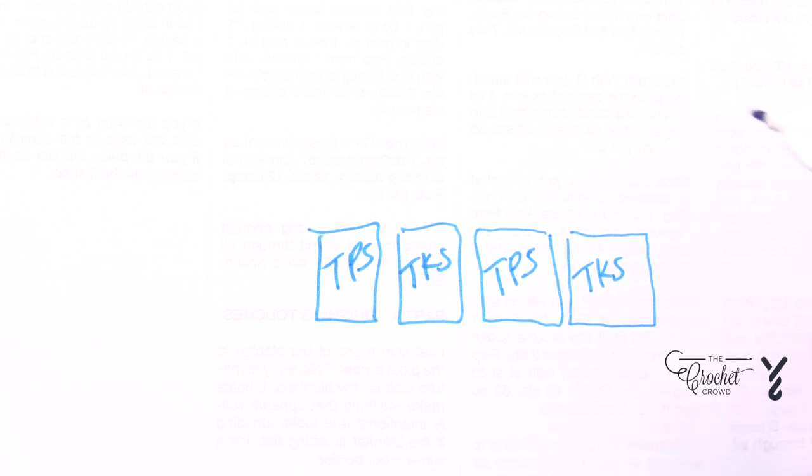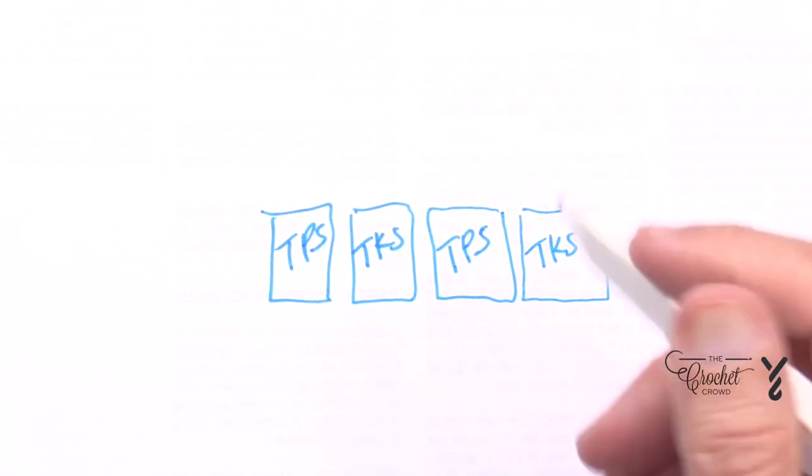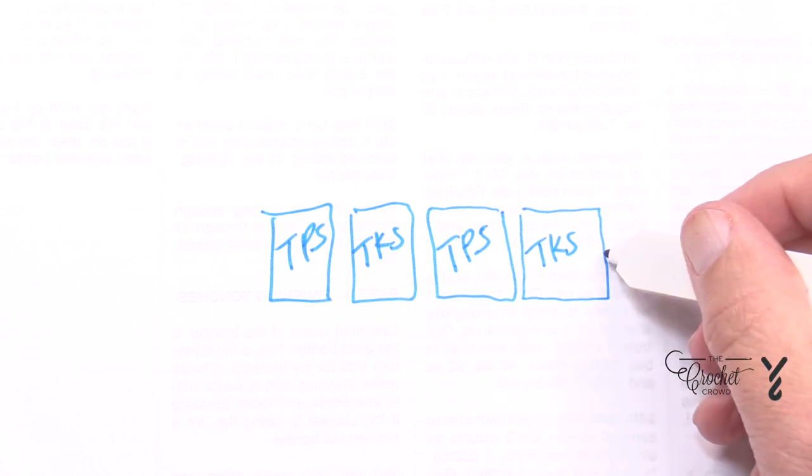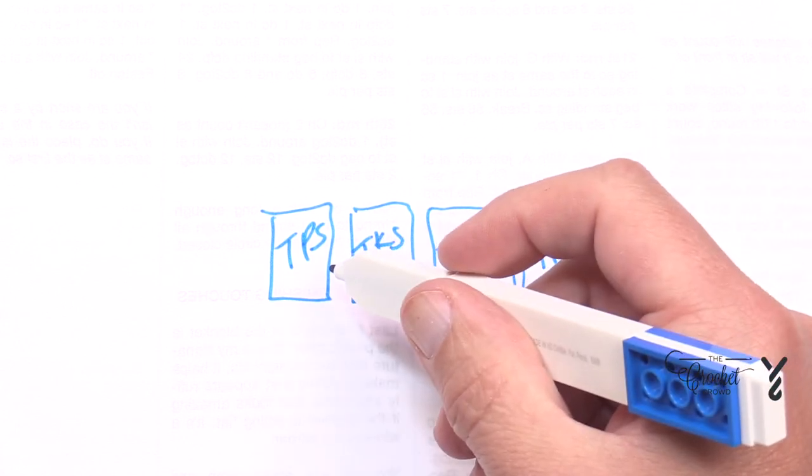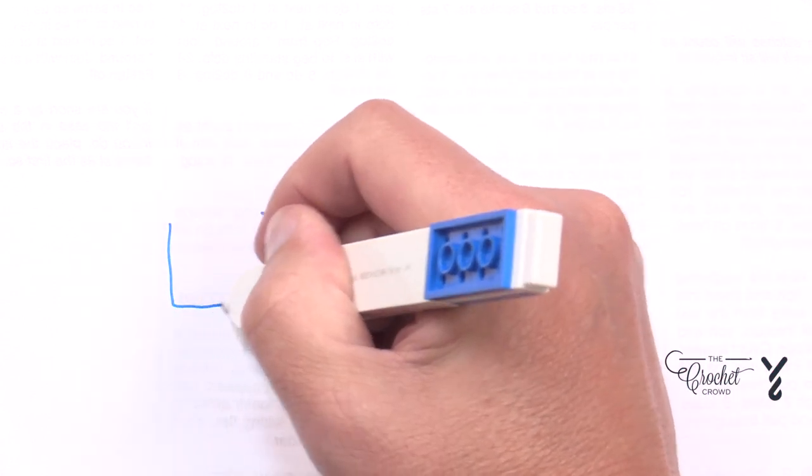If you decide that you want to have a multiple and it's gonna be equal balanced, you're going to notice that one edge will have the knit stitch, the other edge will have the Tunisian purl stitch. So you have to have an odd number of boxes in order to work out your basket weave if you want balance.